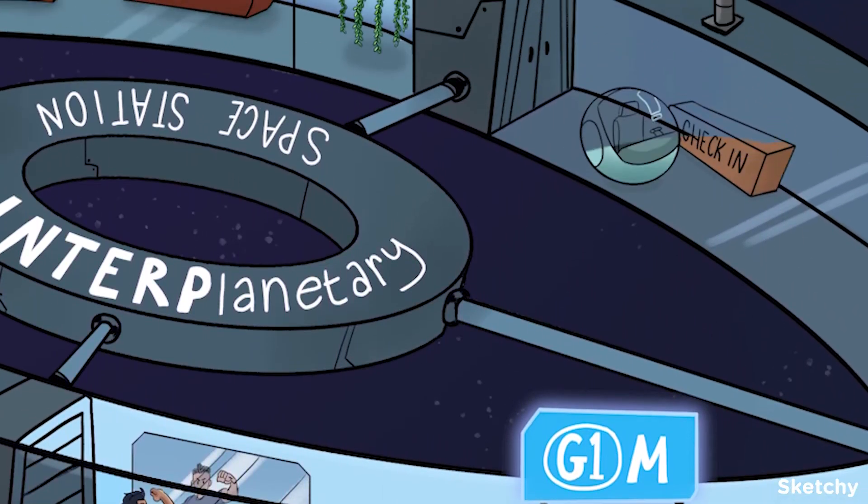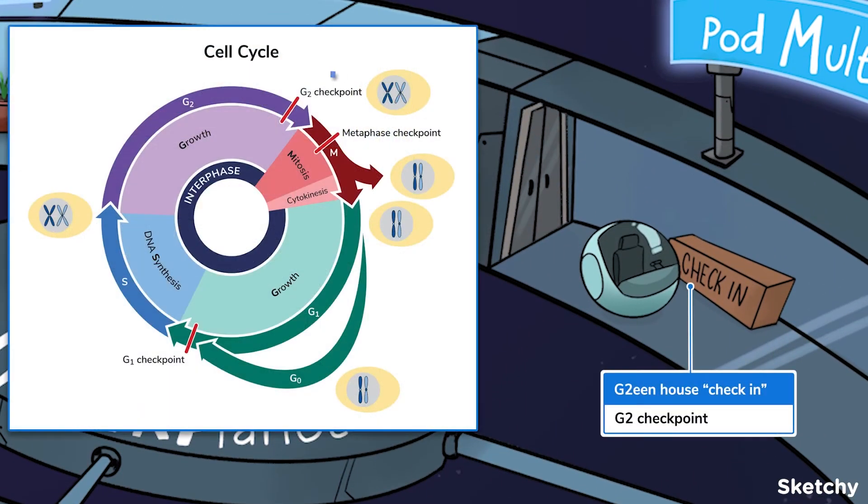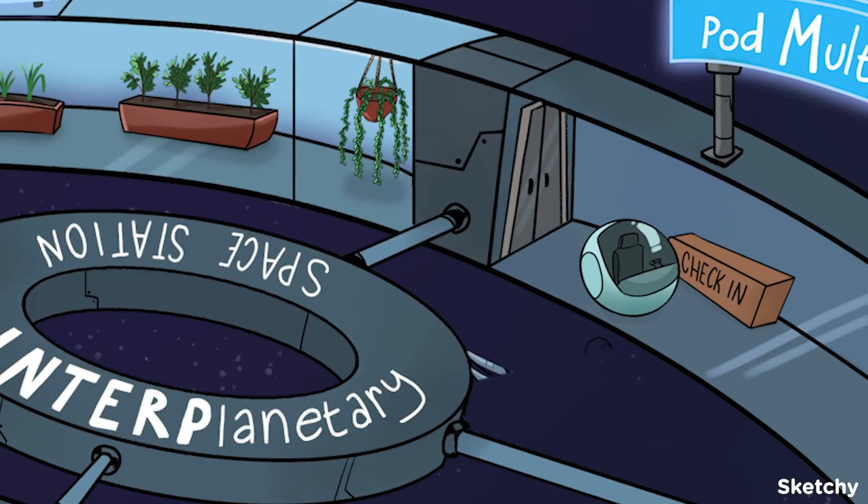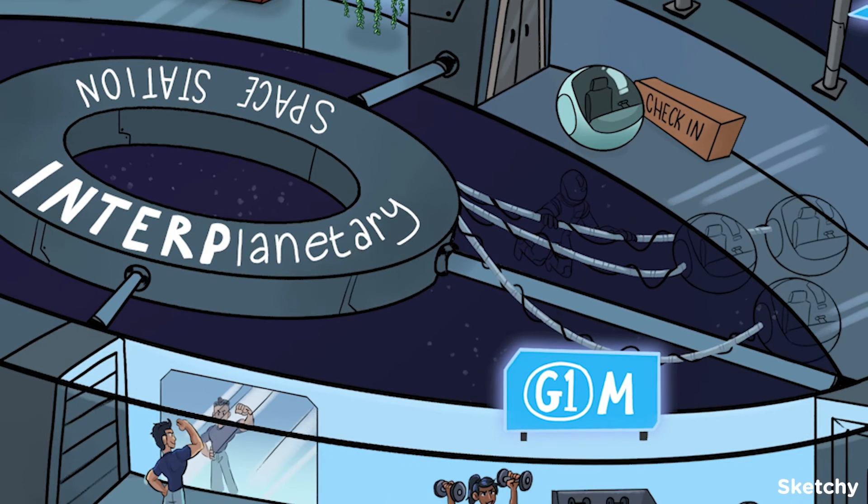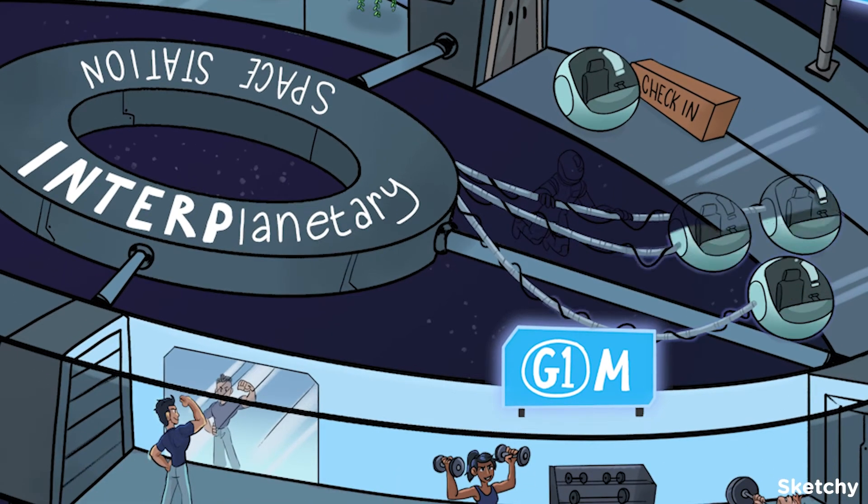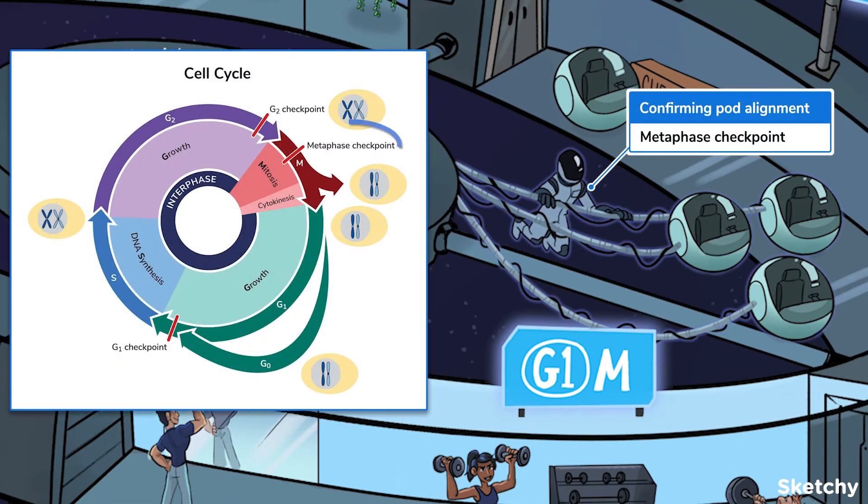The G2 checkpoint comes at the end of G2. It makes sure the cell has grown sufficiently and replicated all the organelles to support two daughter cells in preparation for mitosis. Last, but certainly not least, is the metaphase checkpoint, also called the spindle checkpoint. This occurs at the end of metaphase. It makes sure that each chromosome is properly attached to the spindle and lined up at the metaphase plate. Yep, these space pods look ready to go.